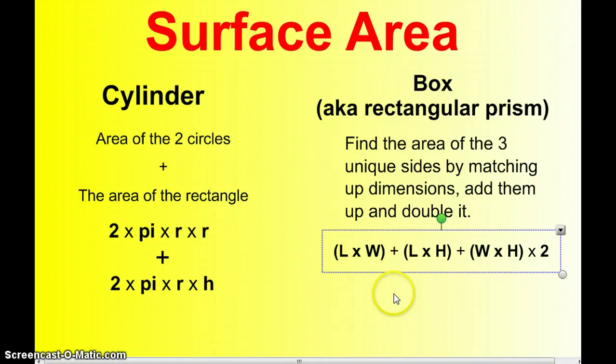For a box, I think it's easy to remember that there's three unique sides with matching pairs. If you take the length times the width, you'll find one side. The length times the height, you find the second side. And the width times the height, you find the third side. You add those together and get three sides. You double your answer to find the matching sides.